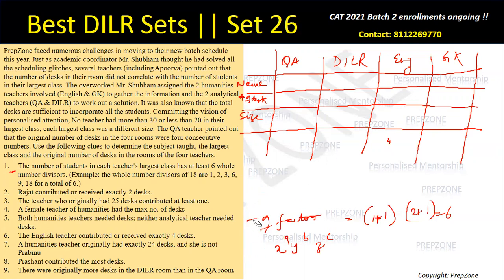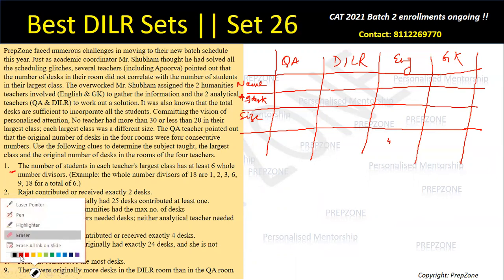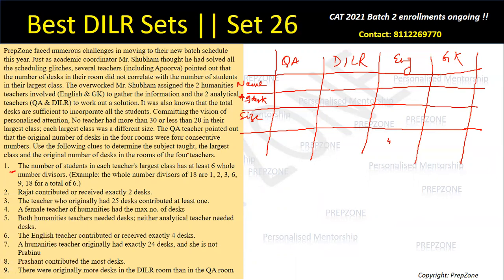The question says at least 6 factors are required, and could be more — 7, 8, or higher. The number of students must be between 20 and 30. So I need to find which numbers from 20 to 30 have at least 6 factors.